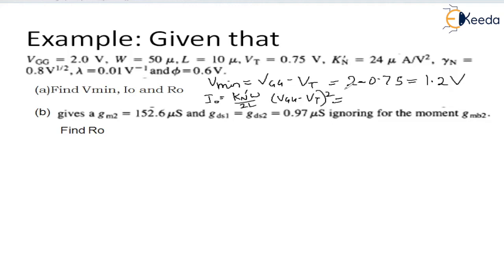Similarly, R0 can be found as R0 equals 1 upon lambda I0. Lambda is given to be 0.01 and I0 is 97, and we get 1.07 megaohms. The value of R0 is 1.07 megaohms.